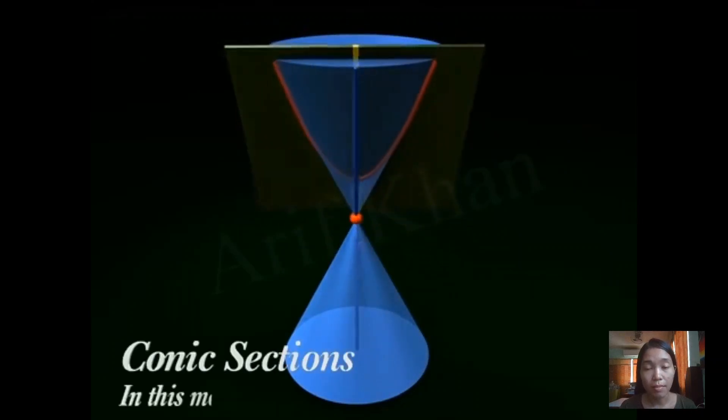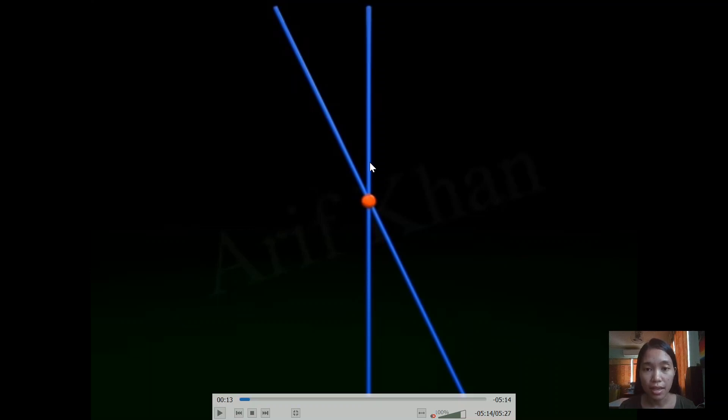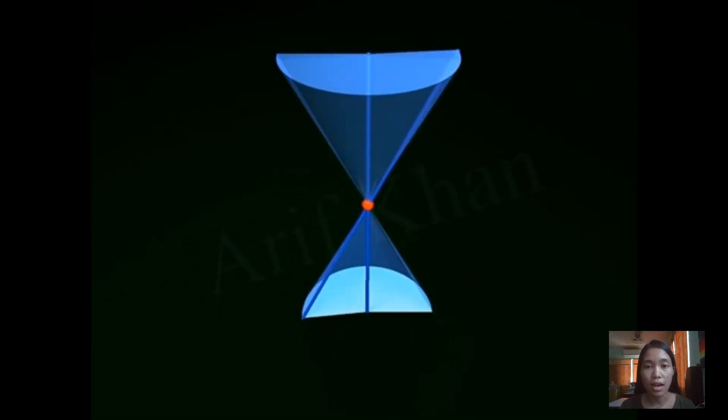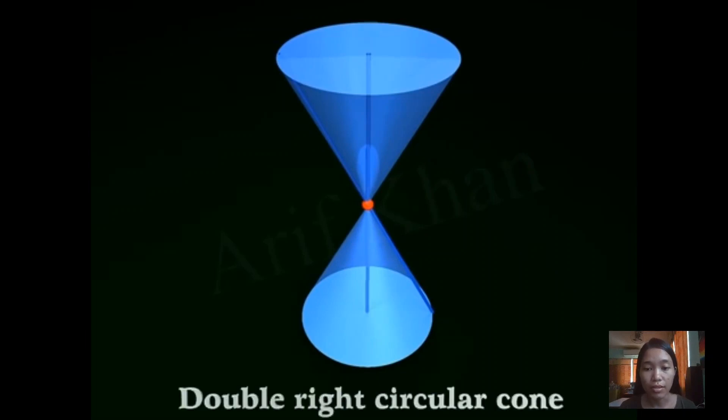So this topic is all about conic sections. In this module you will learn about conic sections. Conic sections started when a certain line intersects a vertical line at a fixed point. That's the red dot, then the slanting line. Notice this slanting line, the line that intersects the vertical line, this line rotated around that vertical line. When it finished rotating, we formed a figure and that figure is called a double right circular cone.